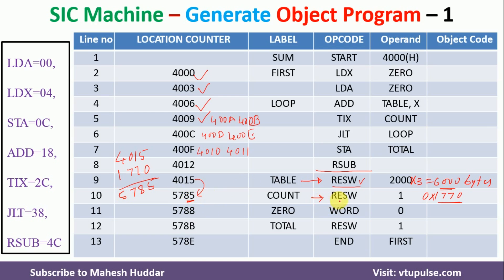When we come across RESW 1, we are reserving 1 word, which is 3 bytes, so we add 3 to 5785 to get 5788. Next is WORD, where we are creating a constant with value 0 — it is a word constant, so it is 3 bytes, and we add 3 to get 578B. After B comes C, then D, then we get 578E. When we encounter RESW again for one word (3 bytes), we add 3 more, giving the last location counter value.